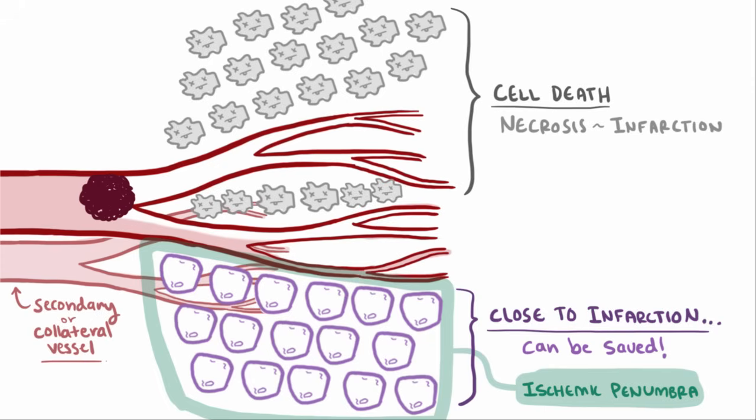Over the course of weeks to months, these secondary arteries can even grow in size to bring more blood to that area, a bit like disaster relief. This process is called collateralization.